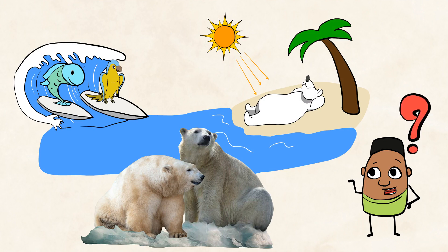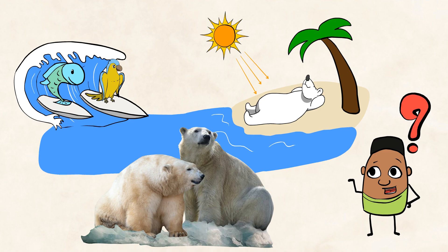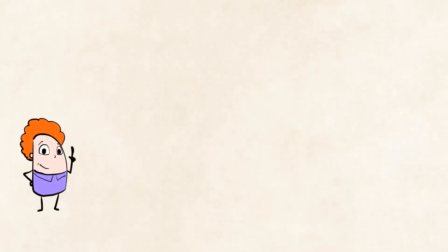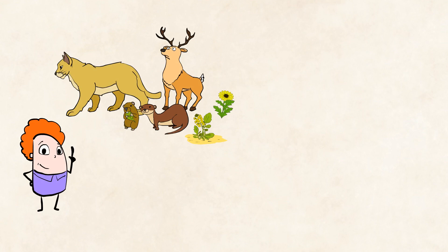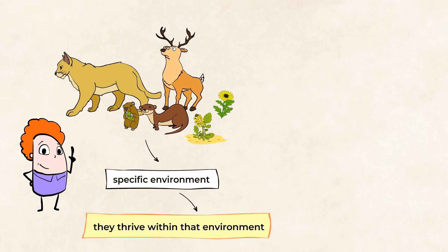But why? It is impossible in nature for these plants and animals to exist in an environment that does not support their needs. Well, let me show you why. All living things, plants and animals, are built for their specific environment and they thrive within that environment.